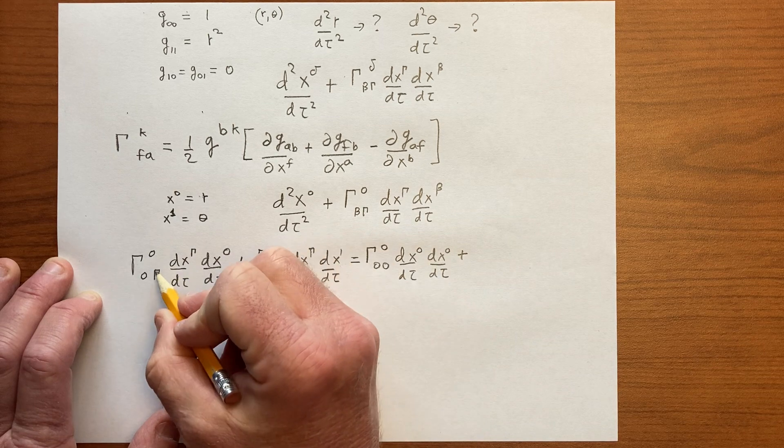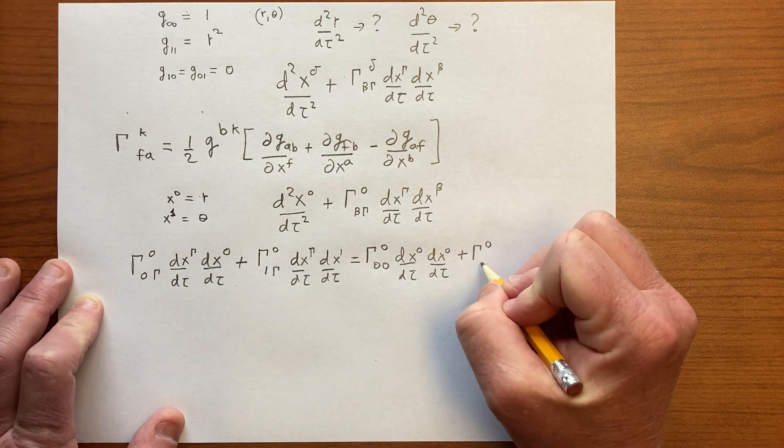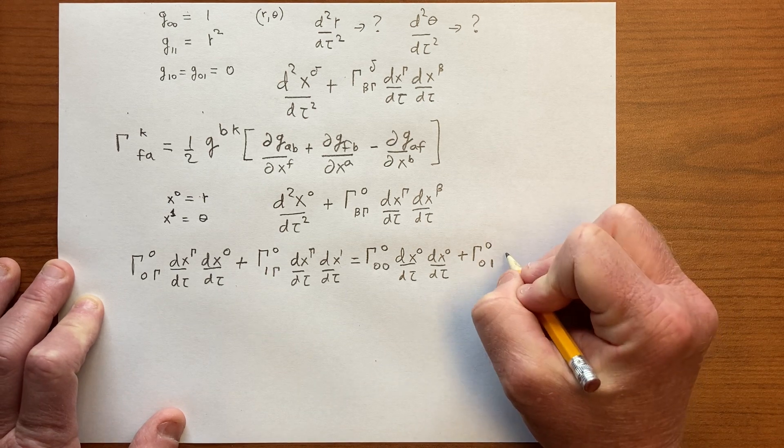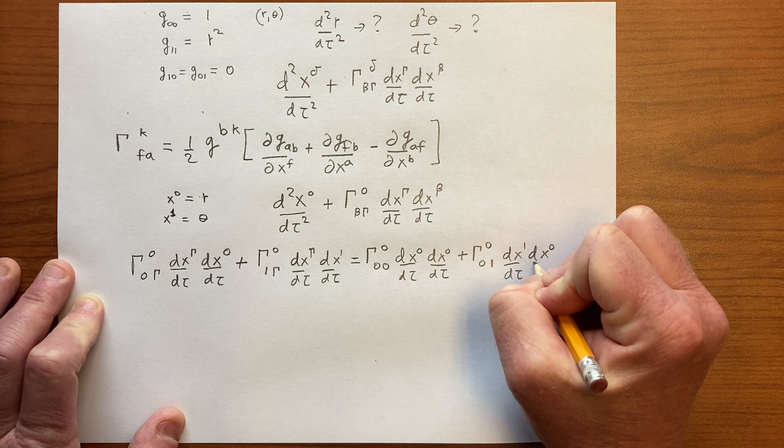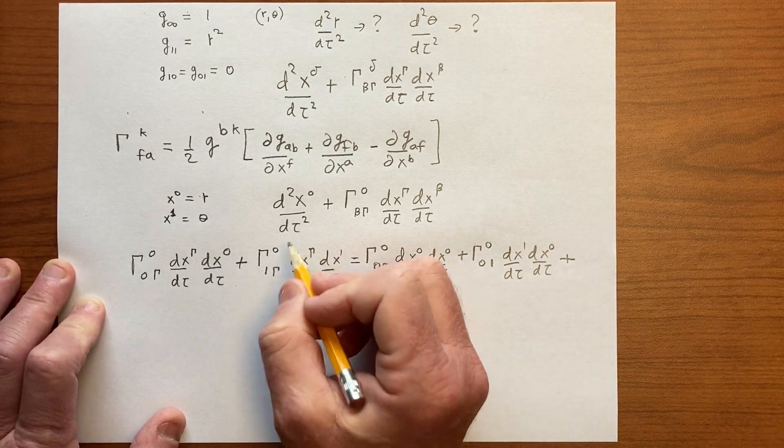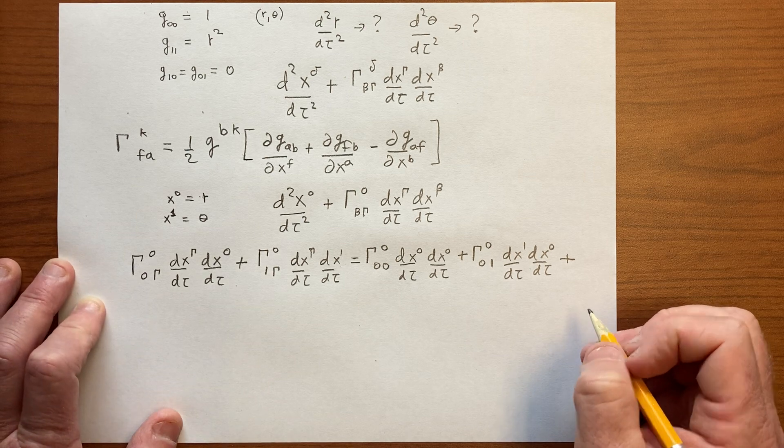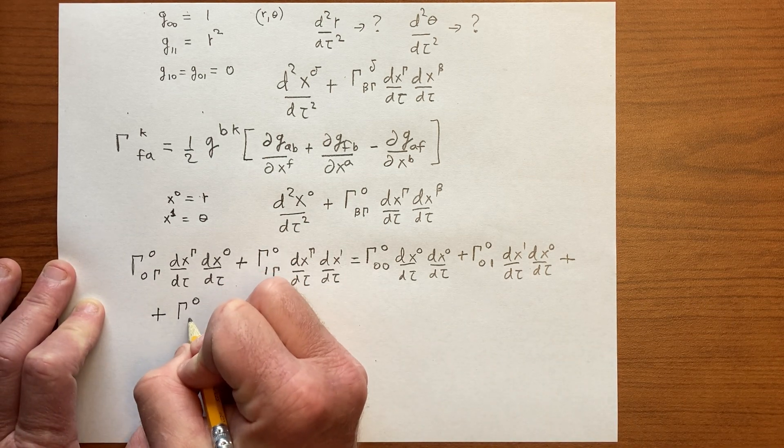And so now we sum on gamma. So now we get Γ^0_00 dx^0/dτ dx^0/dτ plus, we're still here summing on gamma, so we have Γ^0_01 dx^1/dτ dx^0/dτ plus, now we're here summing on gamma, so we get plus Γ^0_10.